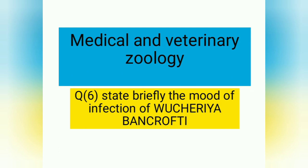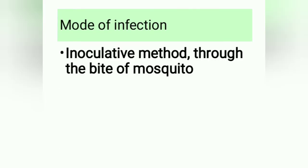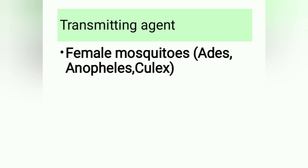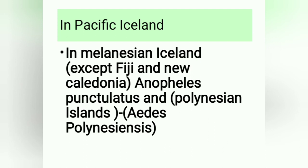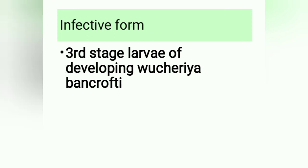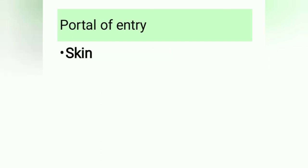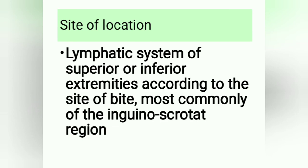Our sixth question: state briefly the mode of infection of Wuchereria bancrofti. Mode of infection: inoculative method — through the bite of a mosquito. Transmitting agent: female mosquito — Aedes, Anopheles, Culex. In India and China: Culex pipiens fatigans; in Pacific Melanesian islands (except Fiji and New Caledonia): Anopheles punctatus; in Polynesian islands: Aedes polynesiensis. Infective form: third-stage larva of developing Wuchereria bancrofti. Portal of entry: skin.